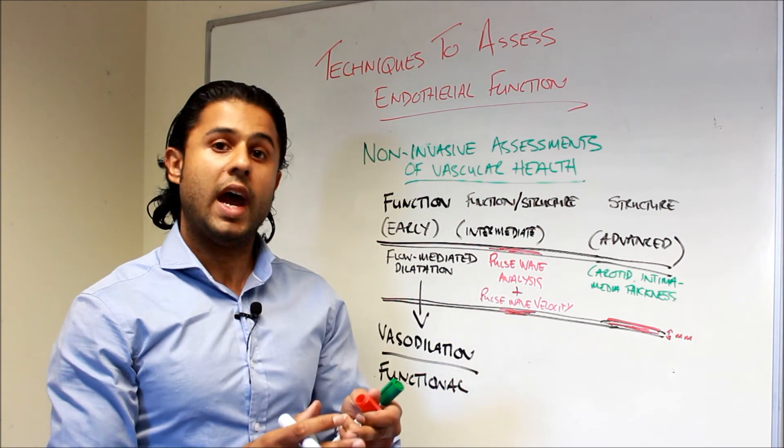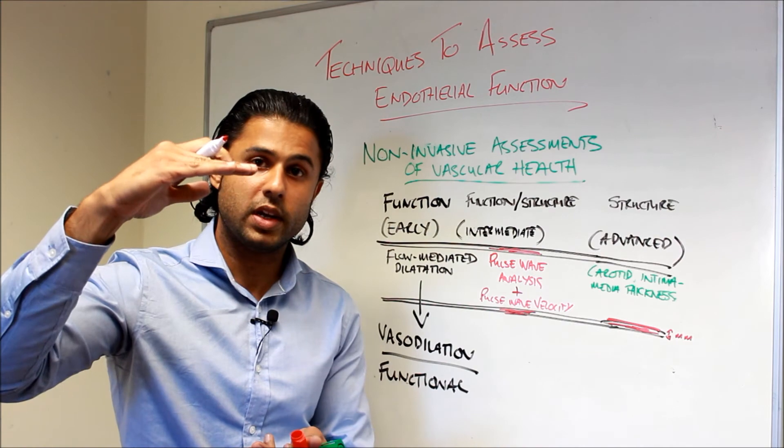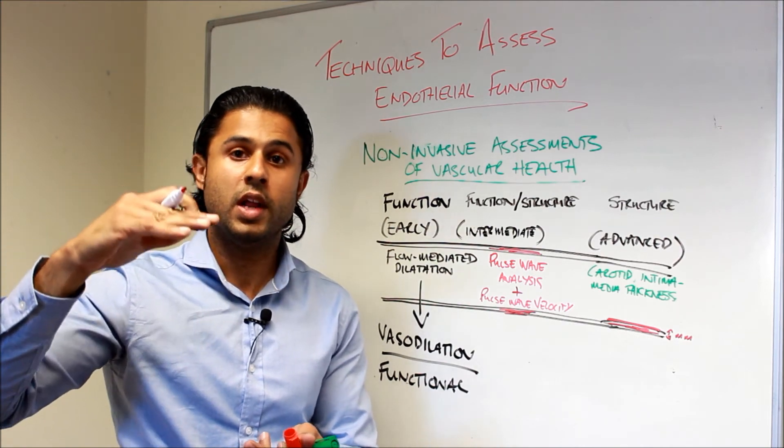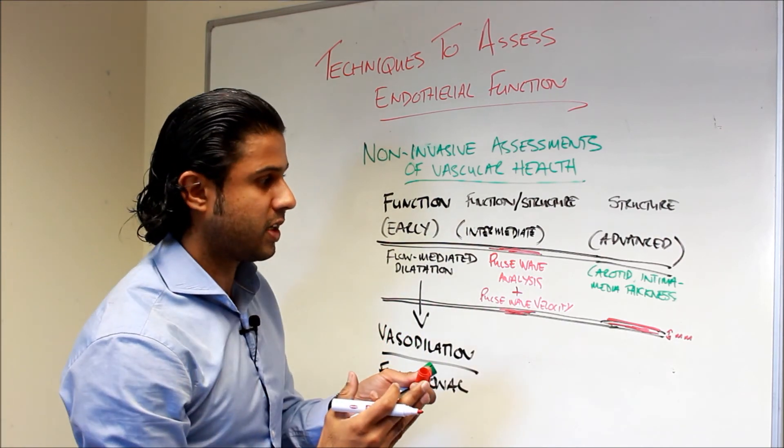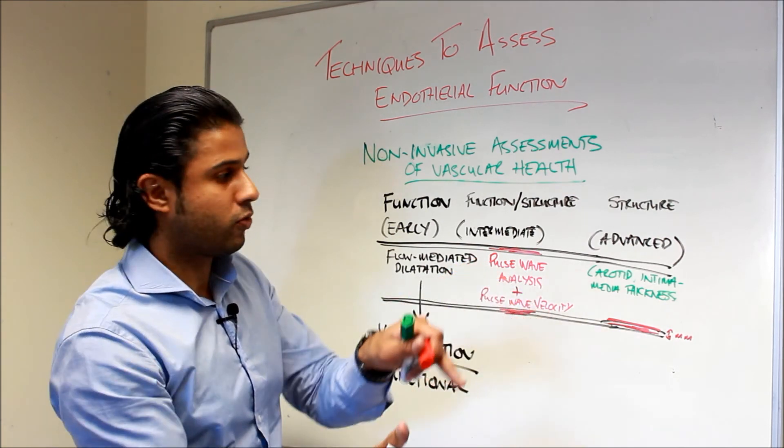In an individual that has atherosclerosis, there's going to be increased thickness between the intimal lining, where the endothelial cells are, and the media, which is where the smooth muscle cells are. And if that thickness is increased, then that indicates atherosclerosis.